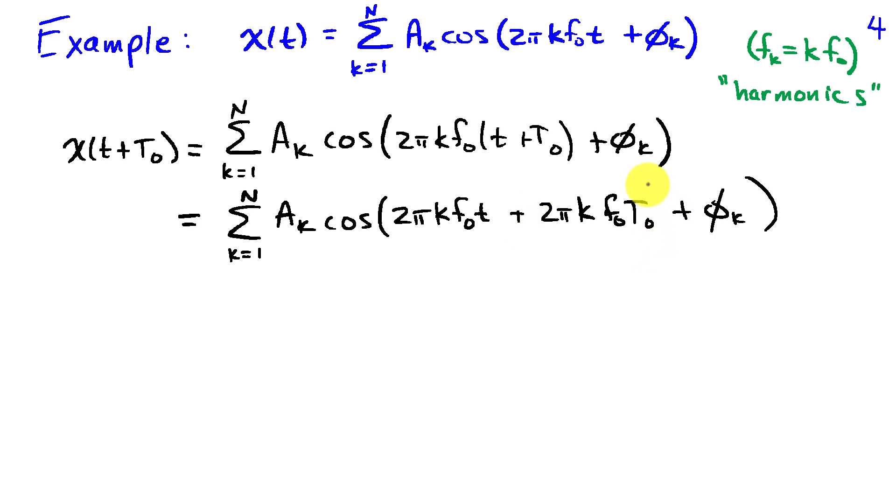And as before, this shifting of time, replacing t by t plus capital T naught, turns into a phase shift in our sinusoids and provided that the phase shift in each sinusoid is some integer multiple of 2 pi, the phase shift won't change the signal and it will end up to be periodic.